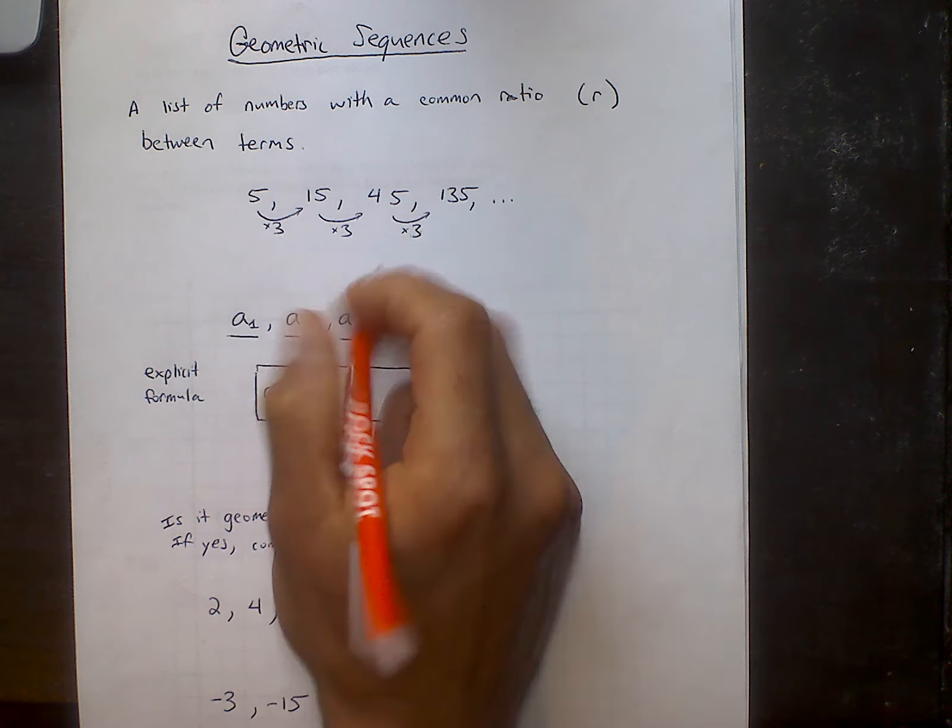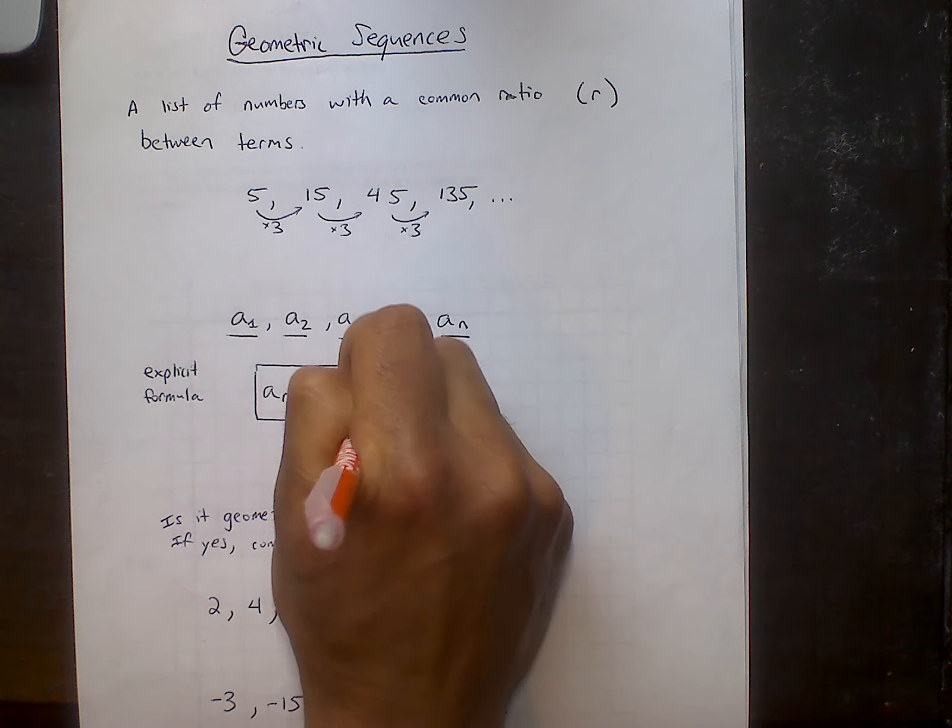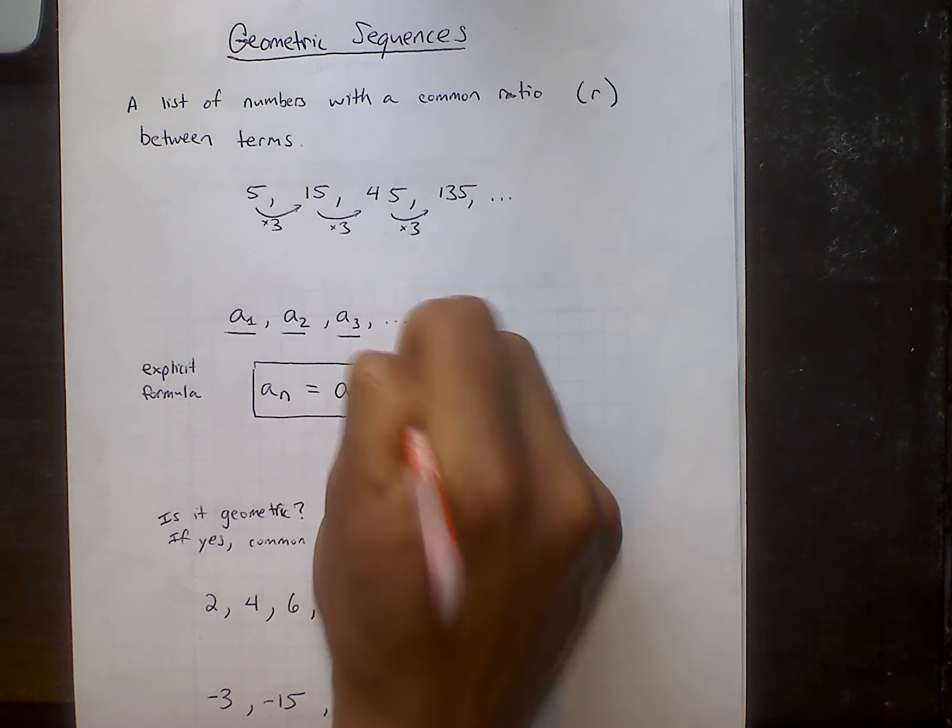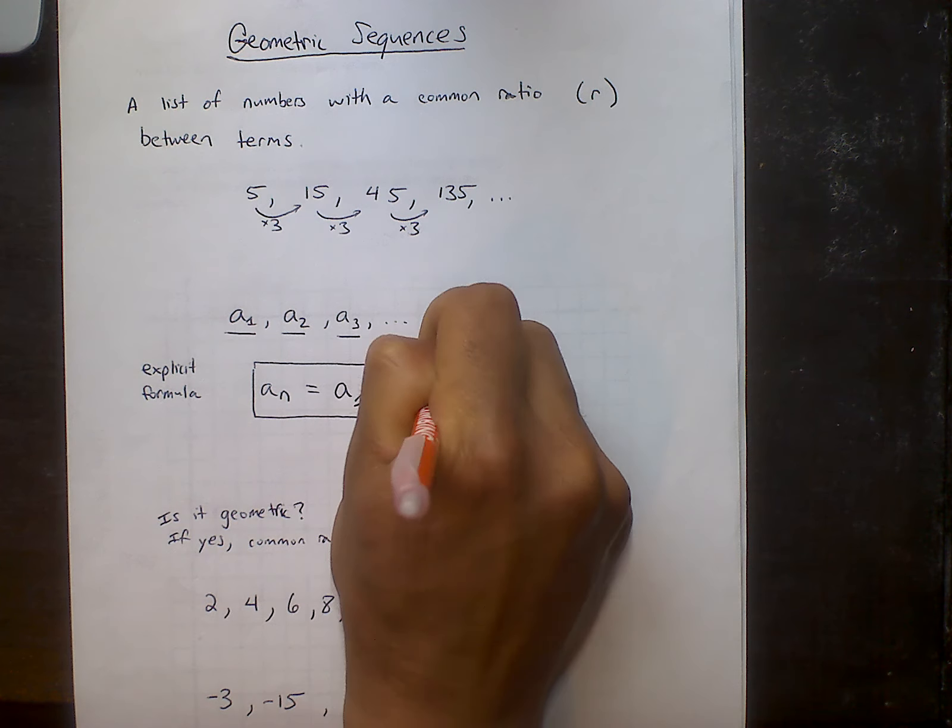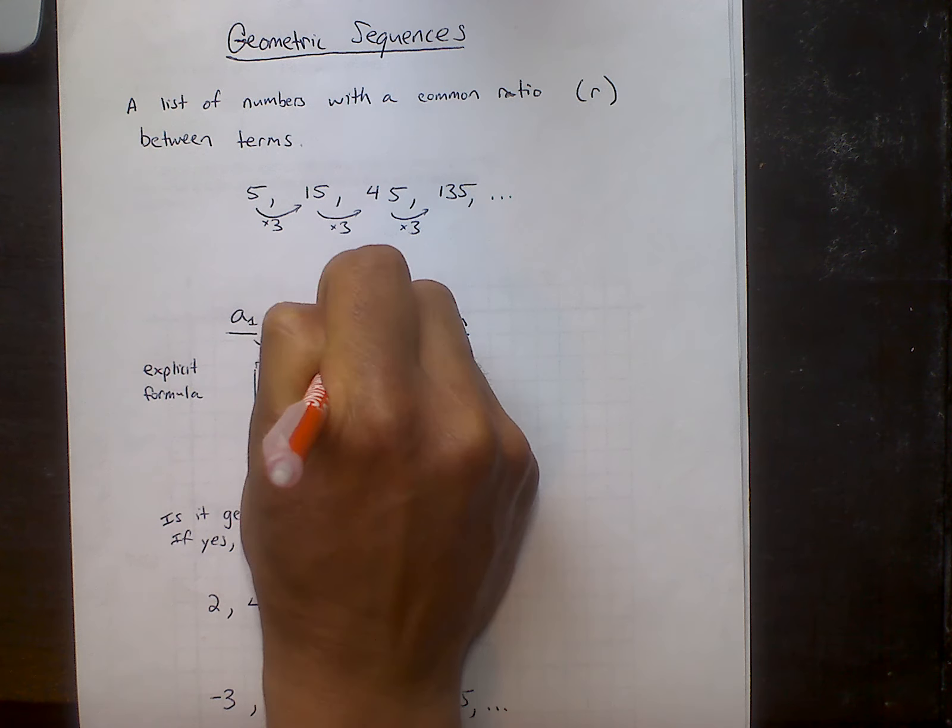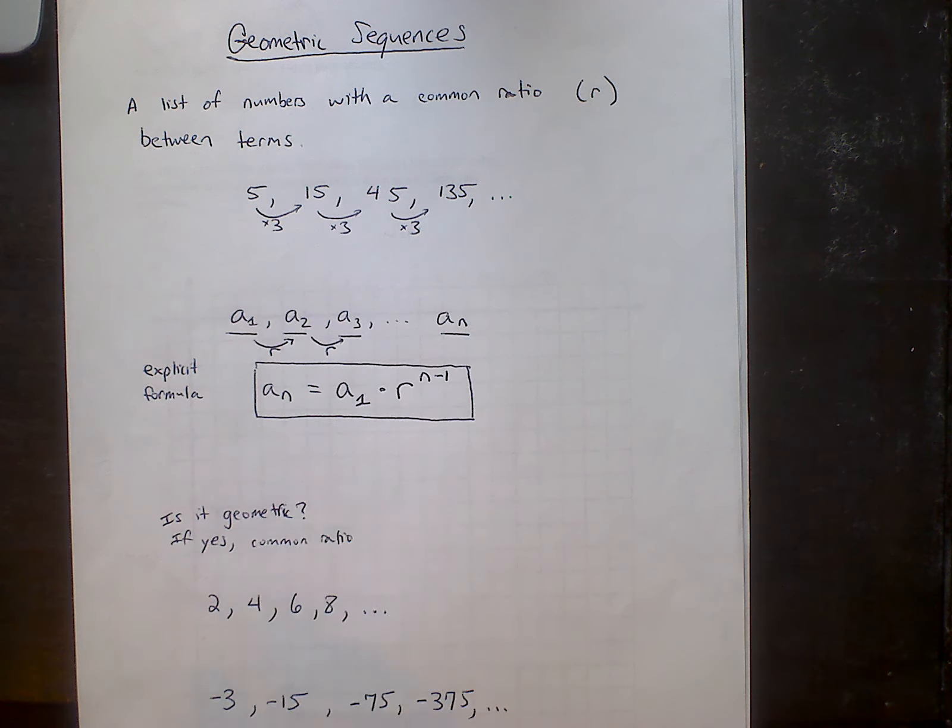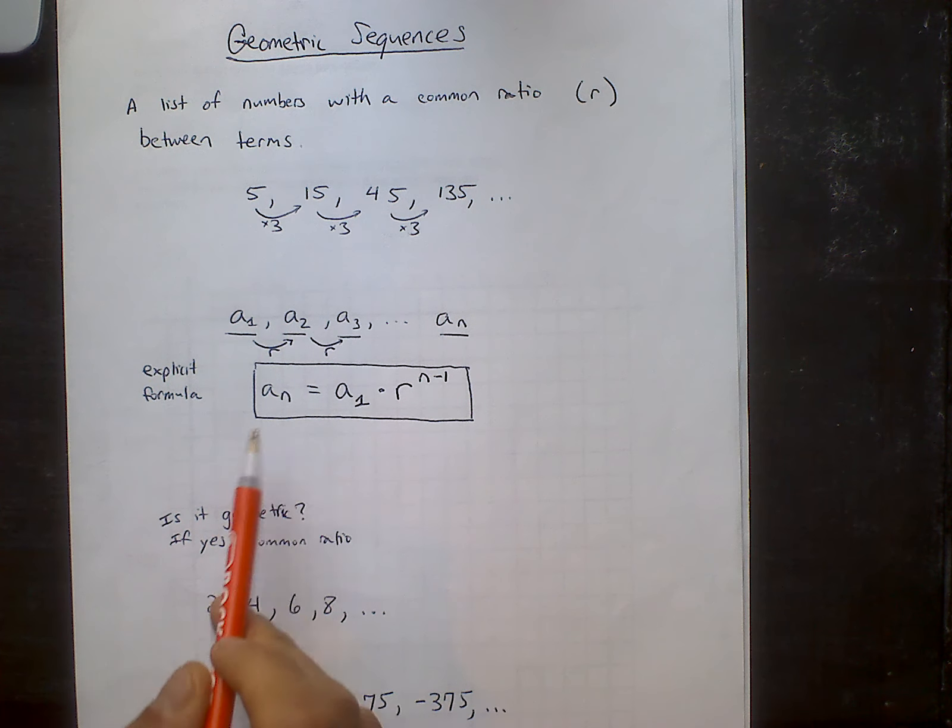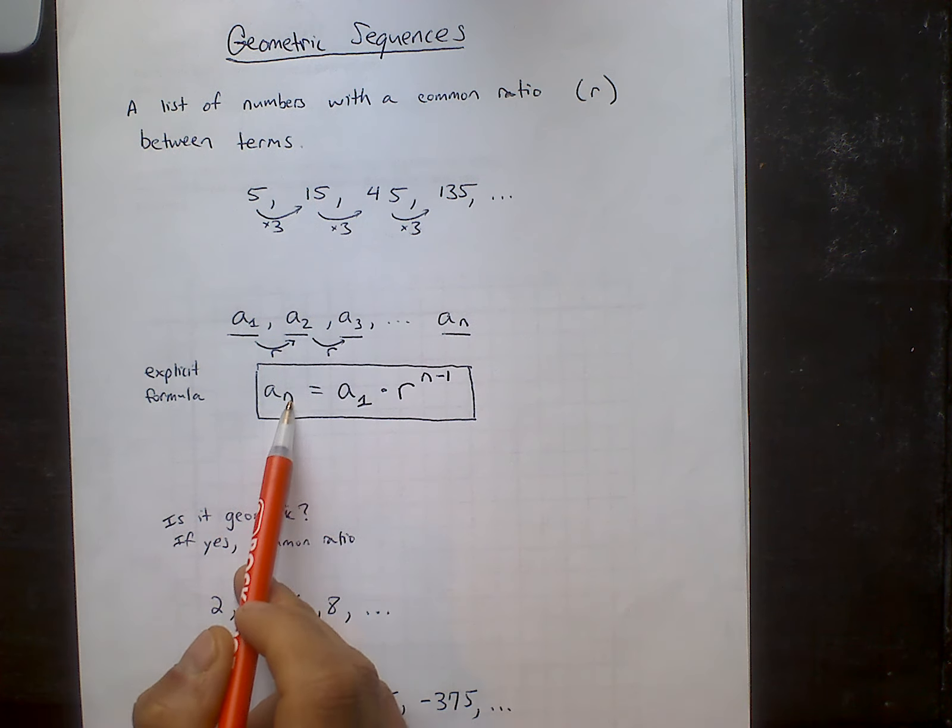So if you're trying to find the nth term of the sequence, the formula is, it's the first term, which is a1, times the common ratio raised to the n minus 1. Just remember, the common ratio was the number being multiplied to get to the very next term. So if you're trying to get to the nth term, it actually gets multiplied by r one less than the number that you're trying to get to.